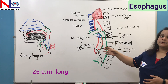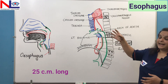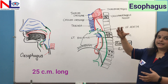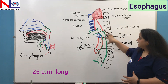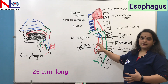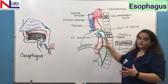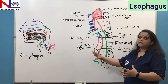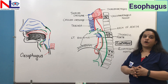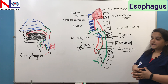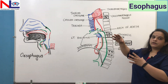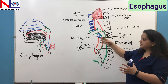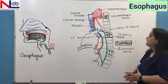It is a 25-centimeter long tube. Starting in the cervical region, it forms the cervical part of the esophagus. When it enters the thoracic region it forms the thoracic part, and when it enters the abdominal region it forms the abdominal part. So depending on where it is situated, it has three parts: cervical, thoracic, and abdominal.